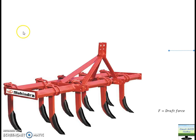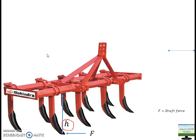Here we will see some theoretical concepts, and later we will solve one problem. As you can see on the screen, this is a cultivator. Suppose this cultivator is going into the field, and one bending force will act on it. The bending force is acting at a working height of H, where H is the depth at which the bending force is acting. F is the draft force which this implement is encountering — the resistance offered to this implement by the soil.